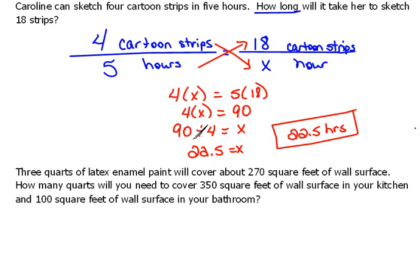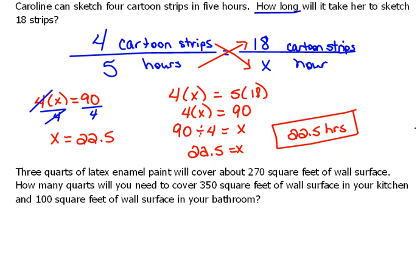Remember, when we get to four times x equals 90, we could also treat this like an algebra problem. To get x alone, instead of multiplying by four, we divide both sides by four — that cancels it out — and we get x equals 90 divided by four, which is 22.5. Either way, you get the exact same answer. Moving forward, I'm going to focus on solving problems using this algebraic approach.